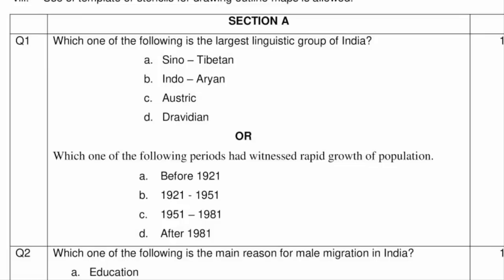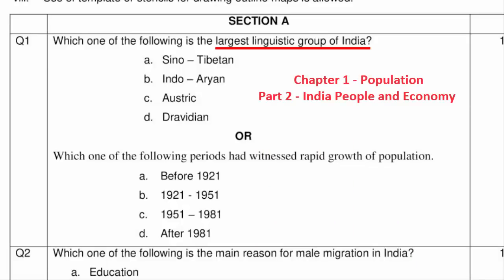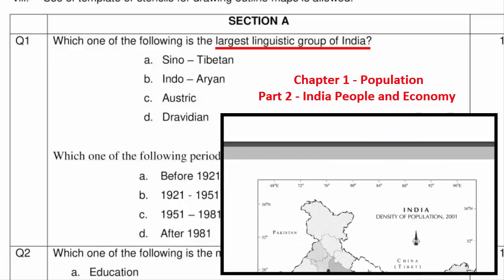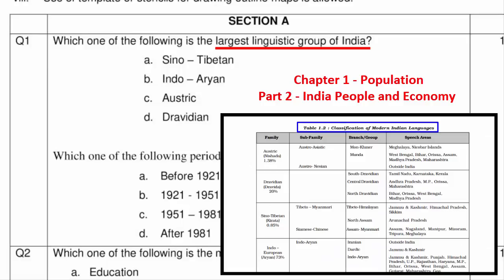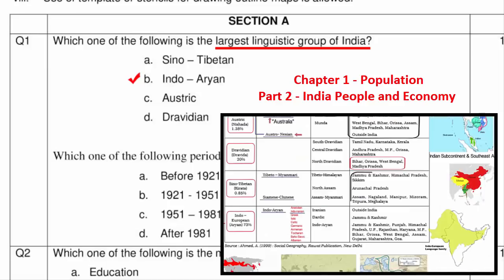The first question asks which one of the following is the largest linguistic group of India. This question is from Part 2 book, Chapter 1 Population. On page 10, you will find the table called classification of modern Indian languages with percentage distribution. Indo-Aryan language is the largest linguistic group of India, spoken by 73% of the population — almost all of North India. Dravidian language is the second largest with 20%, spoken mainly in South India.